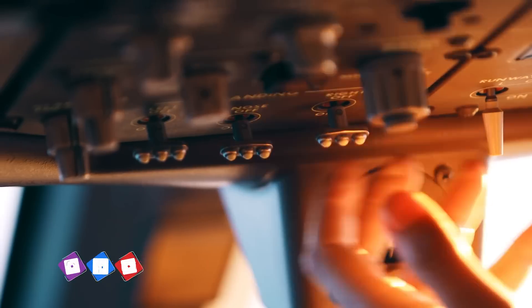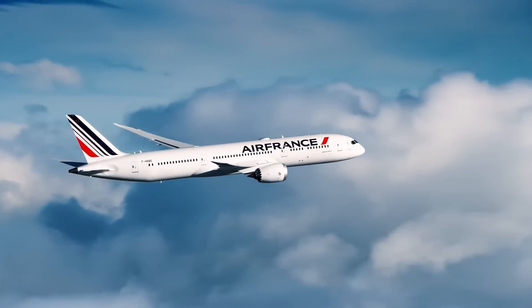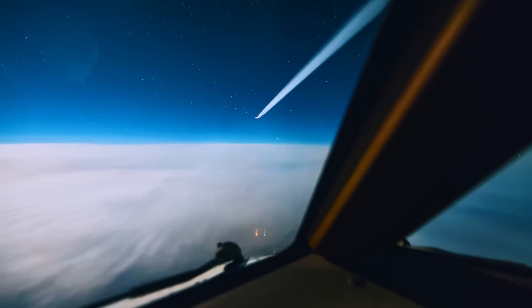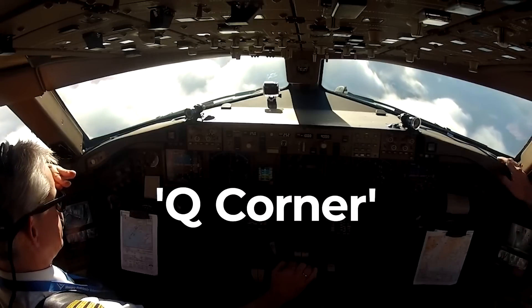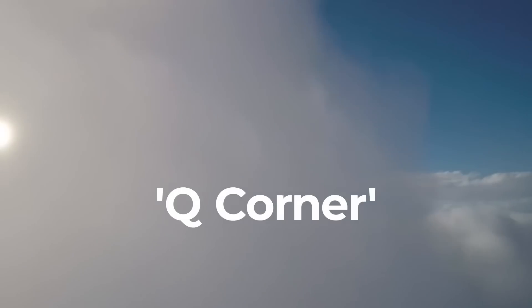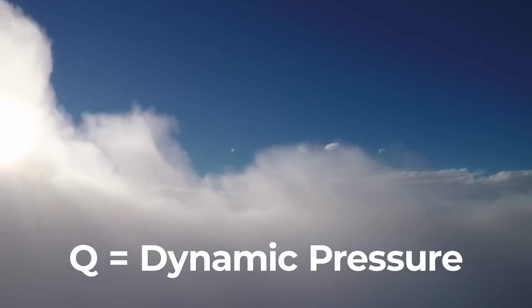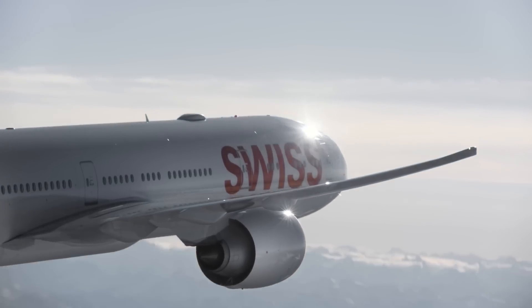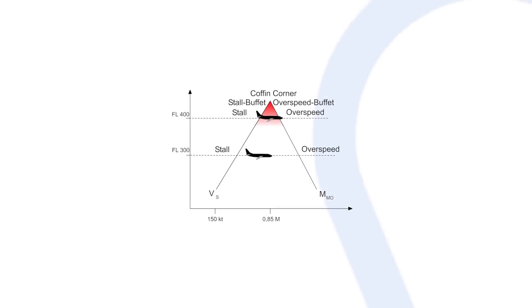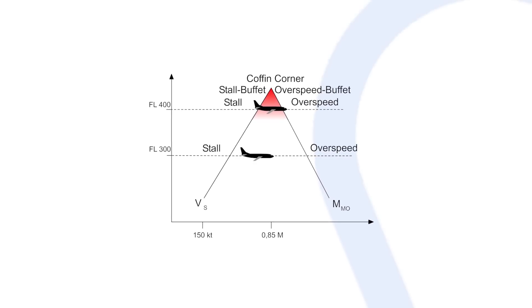An aircraft's altitude at a given time defines the speed at which these two variables intersect. The margin between them will decrease as a plane climbs towards this defining altitude. The website Bold Method reports that the real name for this is the Q corner, as Q is recognized as an official abbreviation for dynamic pressure. However, the phenomenon has also taken on the name coffin corner due to the triangular region of a flight envelope chart where stall speed and critical Mach number are close together.